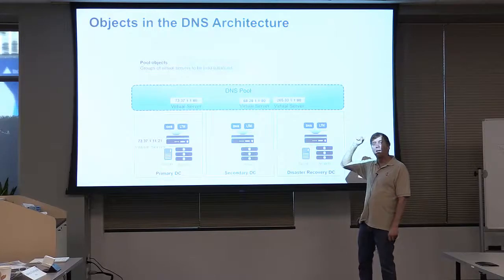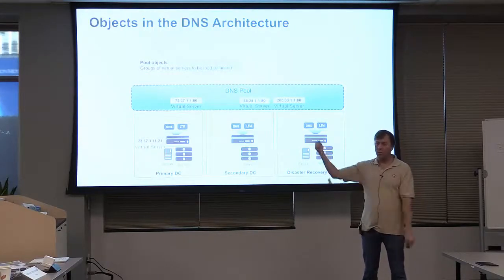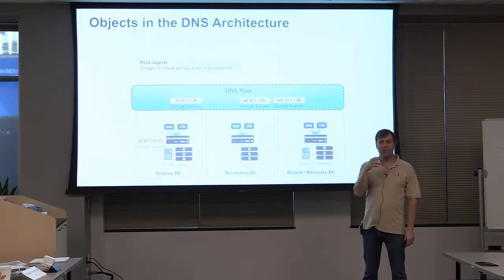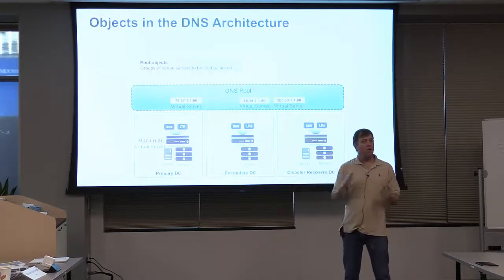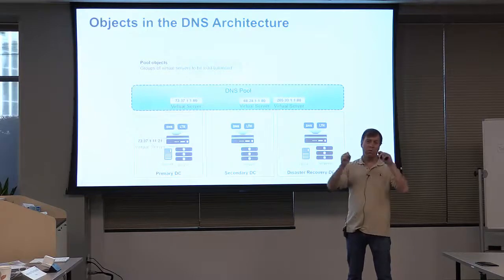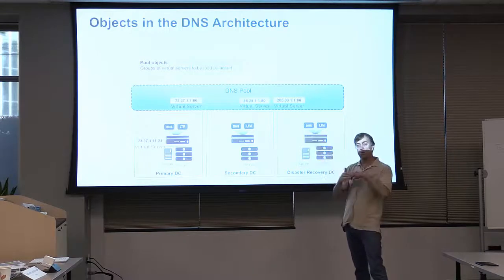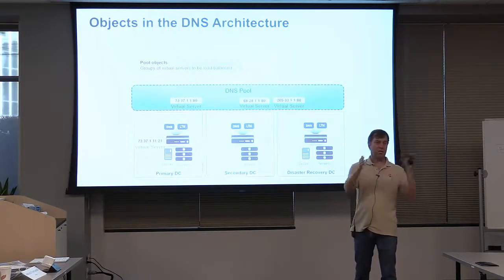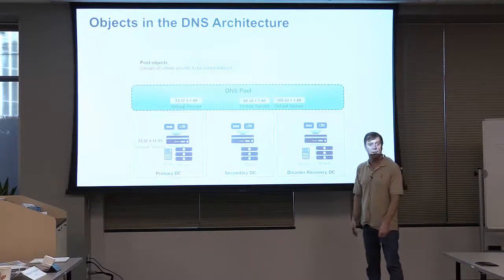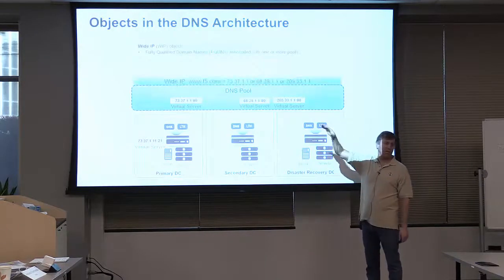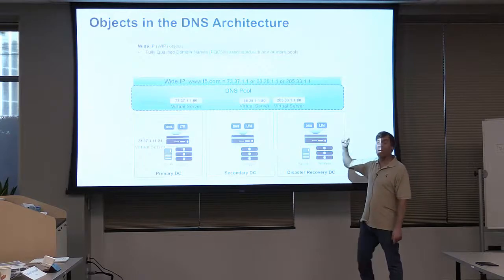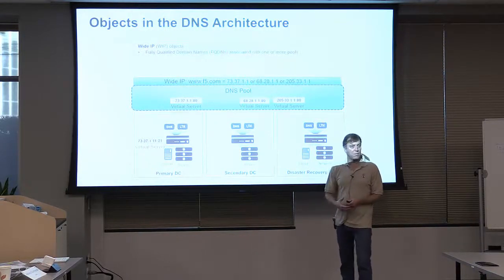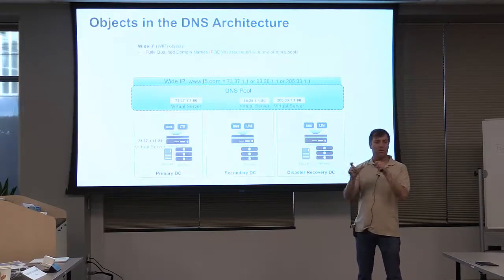The answer to a DNS query is an A record with the IP address. We have ports because monitors need to check availability — for example, a port 80 application is what we go check. What we hand back to the DNS query is just the IP address of one of the virtual servers. We have a DNS pool, and above that the WideIP will hand back one of the pool members as the answer. The virtual server term is used differently here — virtual servers are used in a different context in this product.